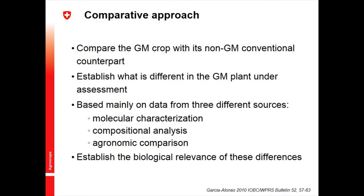We've also heard about the comparative approach — an important element of environmental risk assessment where we compare the GM plant to the non-GM comparator to figure out the difference. If we find a difference, we ask whether it is of any relevance. For a BT plant, one obvious difference is the BT toxin — the intended change. We also use data from molecular, compositional, agronomic, and phenotypic characterization to look for anything else we might need to worry about.